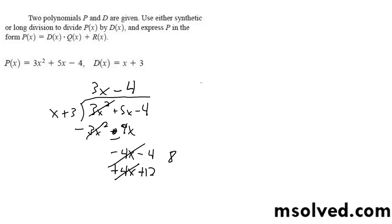So our solution after we divide is 3x minus 4 plus 8 over x plus 3. That's it.